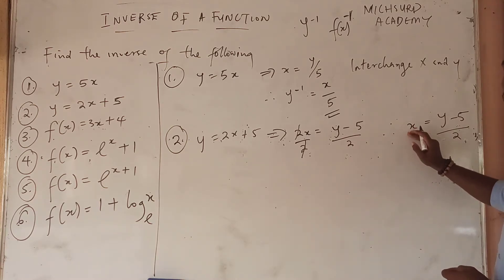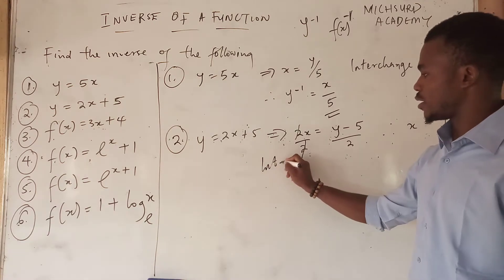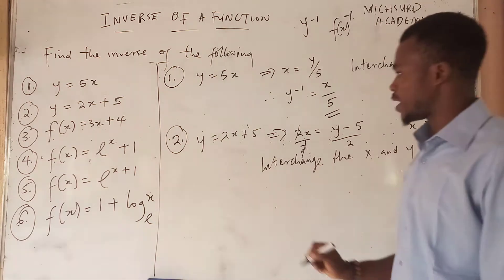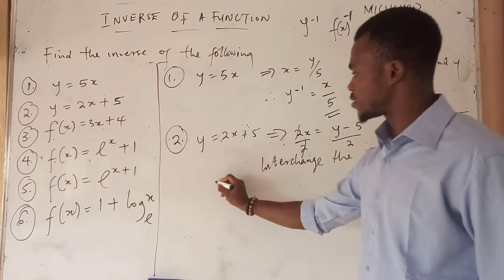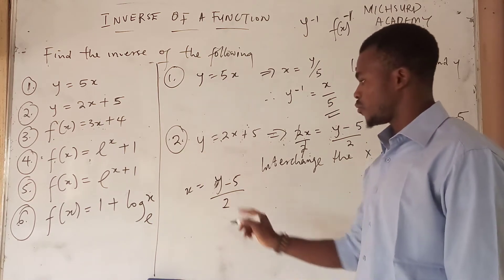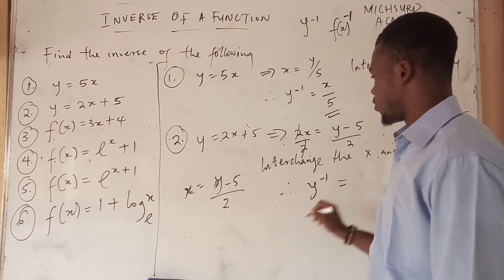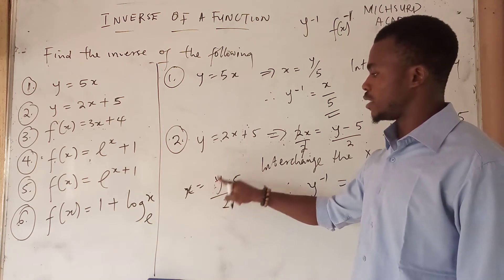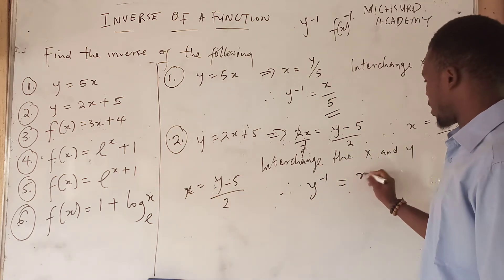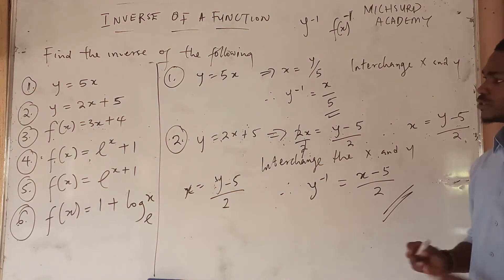We have made x the subject formula. The next thing we do is to interchange x and y. So if we interchange x and y, we get that the inverse y⁻¹ is equal to (x minus 5) all over 2. So that is the solution to the second one.